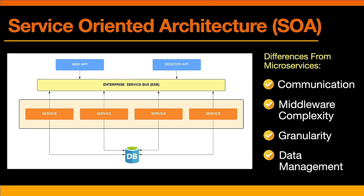Microservices are also more fine-grained than SOA services. Each microservice is responsible for a specific domain and functionality, whereas SOA services are more coarse-grained and can be responsible for multiple domains. To give a practical example, using SOA you may have an inventory management service, but the microservices approach would break that down into smaller services like an availability checking service, a fulfillment service, and an accounting service. Microservices are also responsible for their own data management, whereas SOA services can share data through a common data store. SOA fell out of favor because it was too complex, where microservices offer a more lightweight and flexible approach.